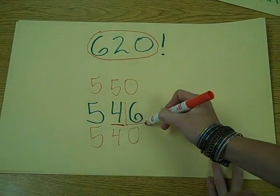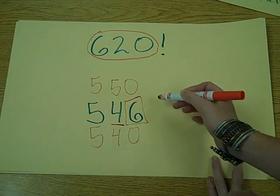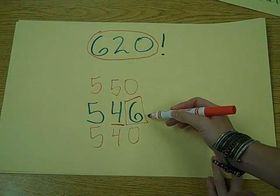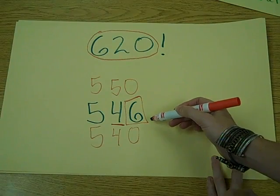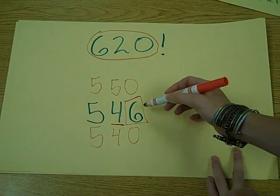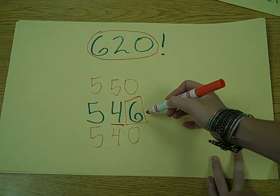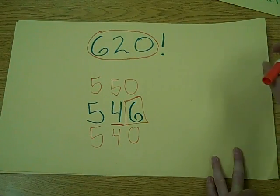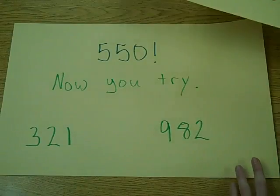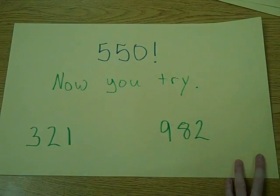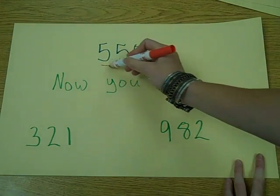Look at the ones place to figure out: four or less, let it rest, or five or more, raise the score. Six is more than five, so we raise the score and round up to five hundred fifty.